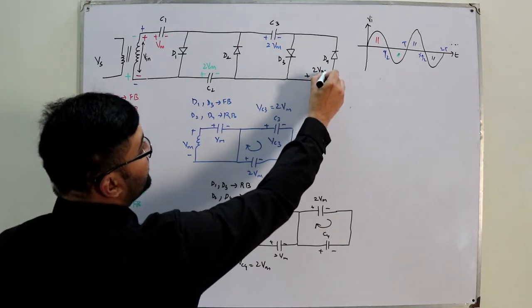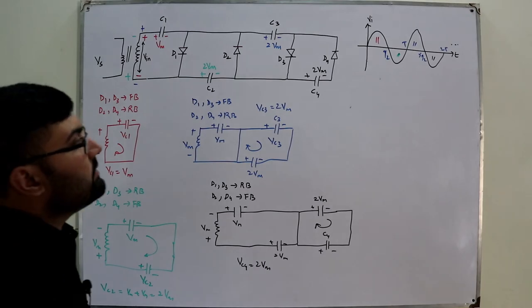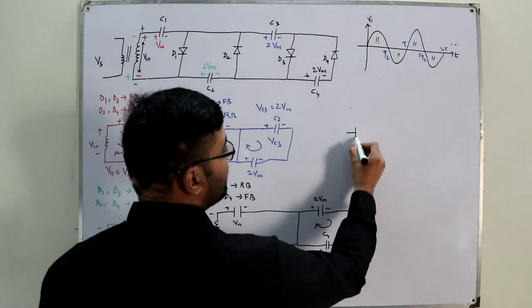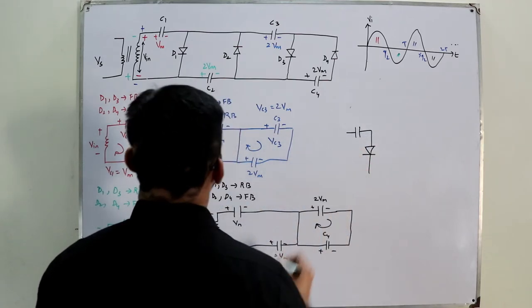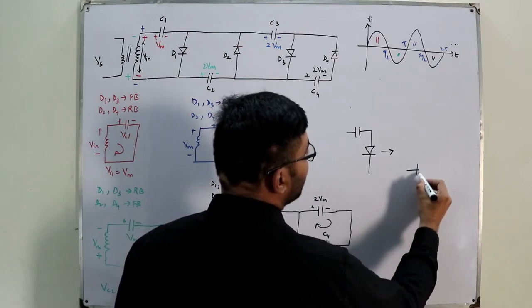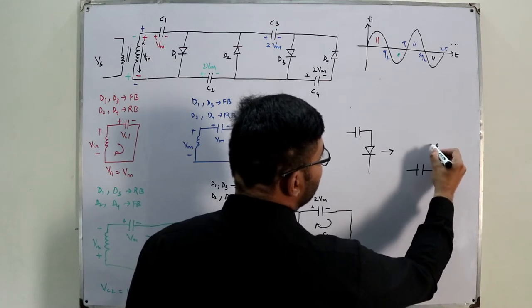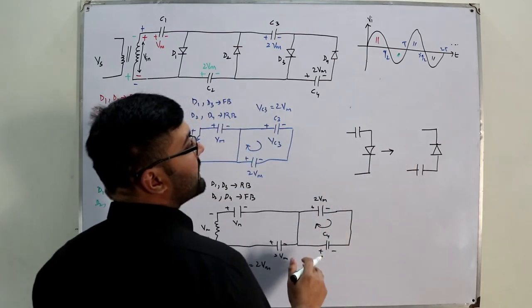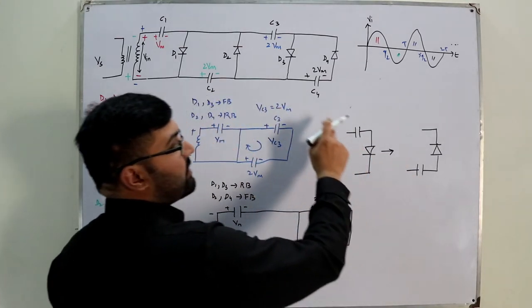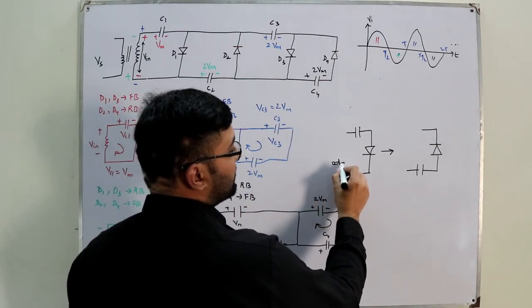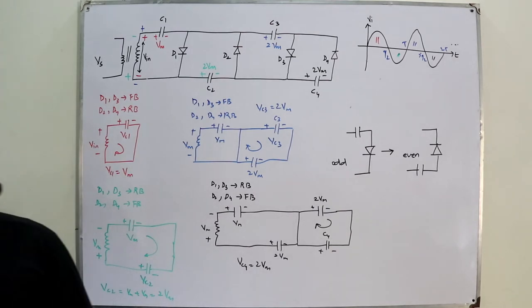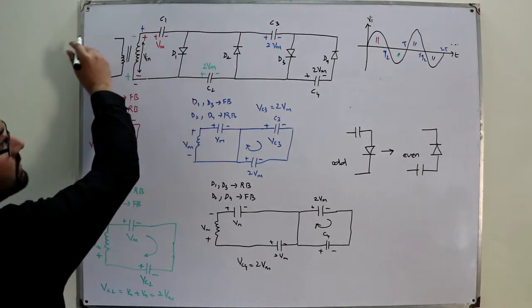Similarly you can repeat the pattern. In the first branch, the capacitor and diode are arranged so the P is upward. In the second branch, the diode is in the lower arm with P down and N upward. Continuing: the third branch repeats the first fashion; the fourth repeats the second. The fifth is again like the odd ones, so odd-numbered branches and even-numbered branches alternate in direction. This overall structure is a general voltage multiplier circuit.